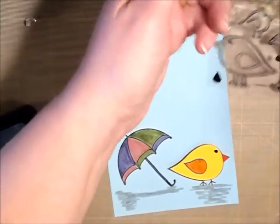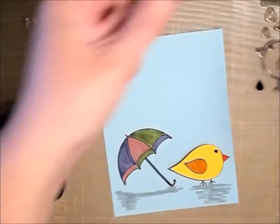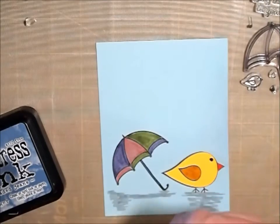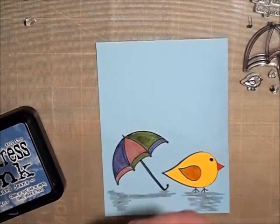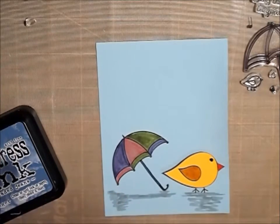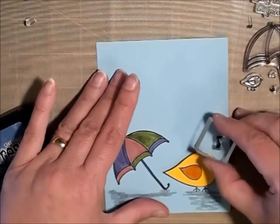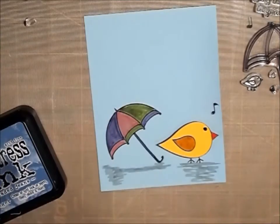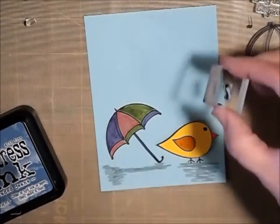Okay, and I'm just going to use a couple of the little musical notes that May May has on this. Because the sentiment I'm using is 'don't hide in the storm but dance in the rain,' and I think if you're dancing, you're going to be singing. So for this, I'm going to use my black archival ink and just put a few musical notes above the little birdie.